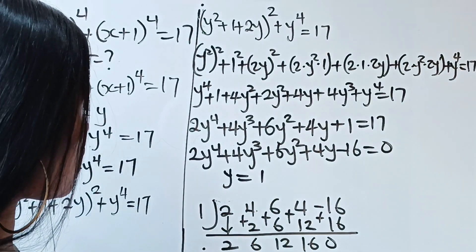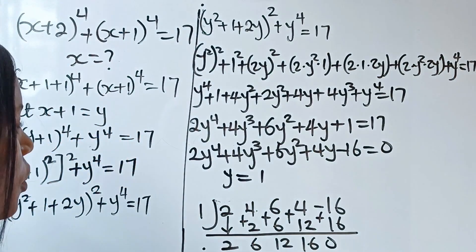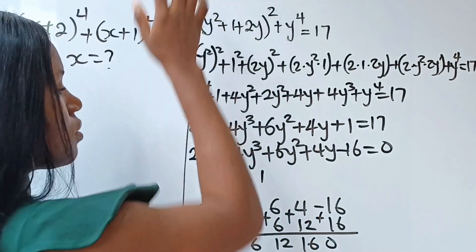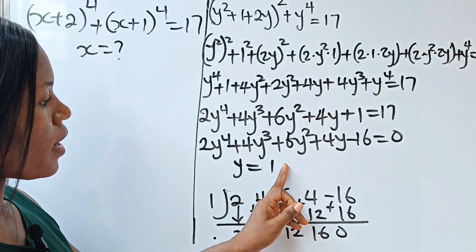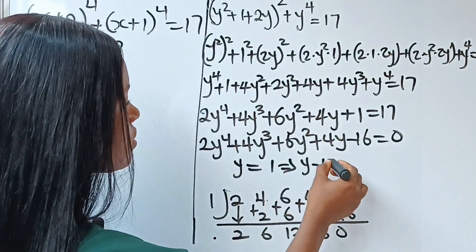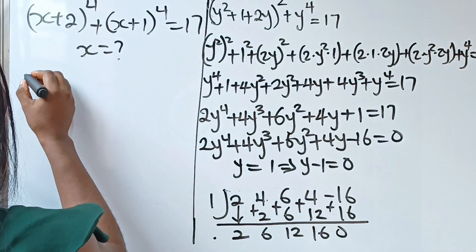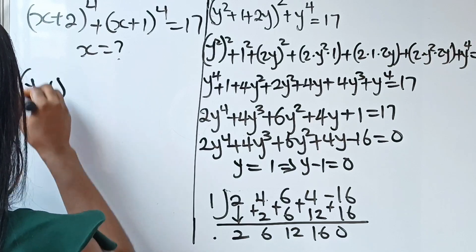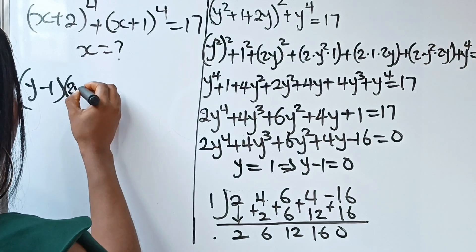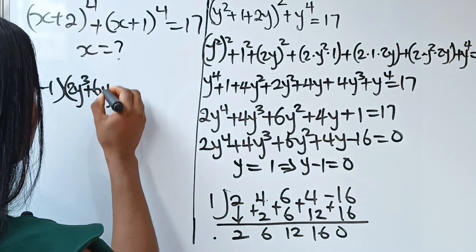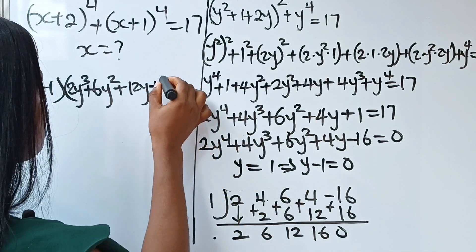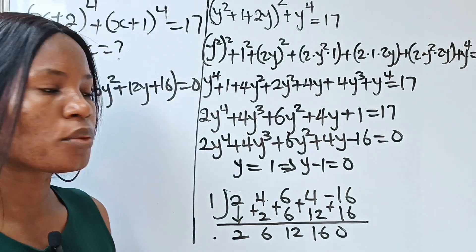The remainder is zero, confirming y equals 1 is a root. This means y minus 1 is a factor equal to zero. So the factored form is y minus 1 multiplied by the cubic polynomial 2y cubed plus 6y squared plus 12y plus 16 equals zero.